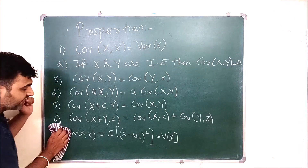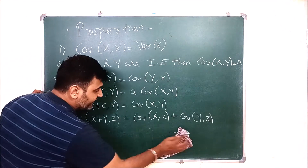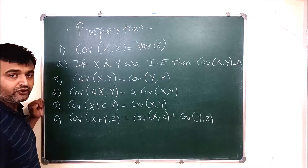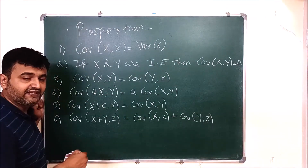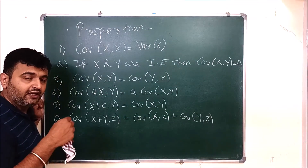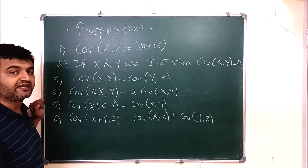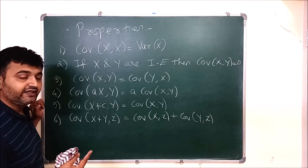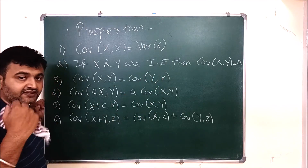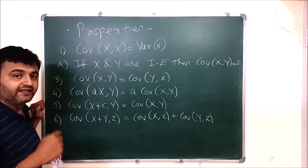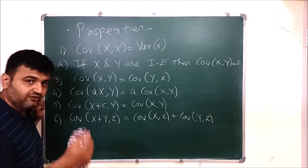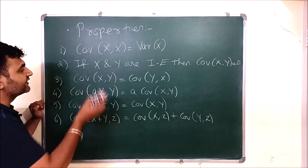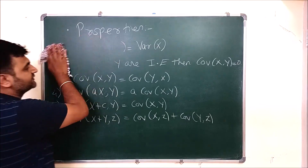The second property: if X and Y are independent, then Cov(X,Y) = 0. Because Cov(X,Y) = E[XY] - E[X]·E[Y]. When they are independent, E[XY] = E[X]·E[Y], so they are equal and the covariance becomes 0.